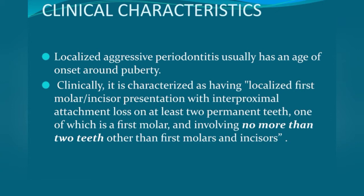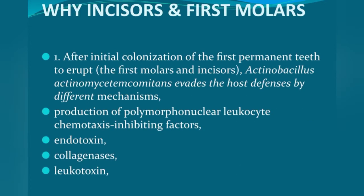The definition to remember: localized first molar or incisor presentation with interproximal attachment loss on at least two permanent teeth, one of which is a first molar, involving no more than two teeth other than first molars and incisors. Now, what is the reason that specific teeth or specific areas of the mouth are affected? Why do incisors and first molars get affected?